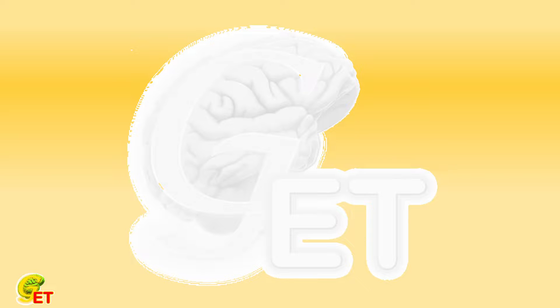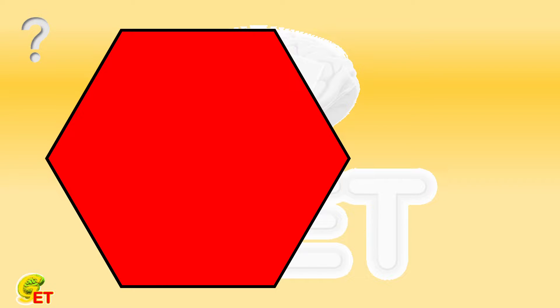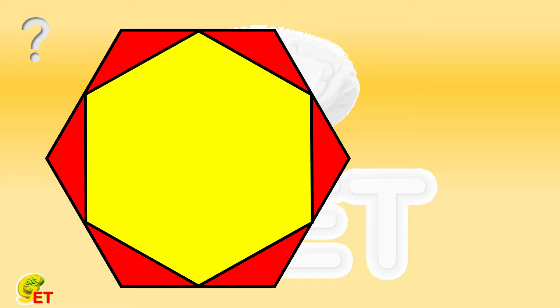There is a regular hexagon, we paint it red. By connecting the midpoints of all sides, we obtain a new regular hexagon, which we paint yellow. At the same time, we also obtain 6 red triangles.